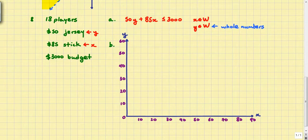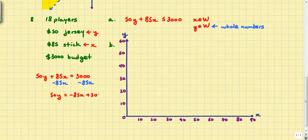For part B, it says to use your inequality to model the situation graphically. I only have the positive side of the x and y axes because we have whole numbers, so we don't need the negative side. We're going to put this equation into slope-intercept form. I'm going to subtract 85x from both sides first. So I have 50y equals negative 85x plus 3000. Then I'll divide both sides by 50.